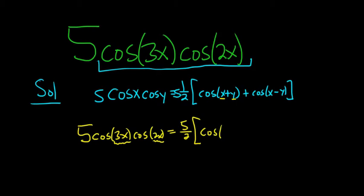So it will be 3x plus 2x, plus cosine, and then 3x minus 2x. Right? Just x, y, x, y.